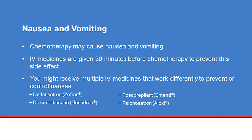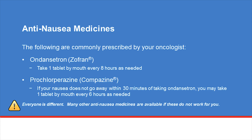When your chemotherapy can potentially cause nausea and/or vomiting, we commonly give IV medicines at the start of your infusion appointment to prevent nausea. The names of some of these medicines are listed. Ondansetron and dexamethasone are standard anti-nausea medicines for everyone receiving FOLFOX. In case you develop nausea at home, your oncologist will prescribe medicines like ondansetron or prochlorperazine that you can take by mouth. Each medicine works differently, and your prescription bottle will indicate how often you can take each medicine. Only take these nausea medicines if you have nausea.